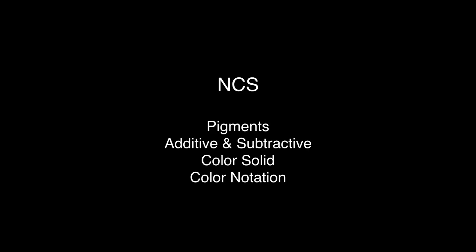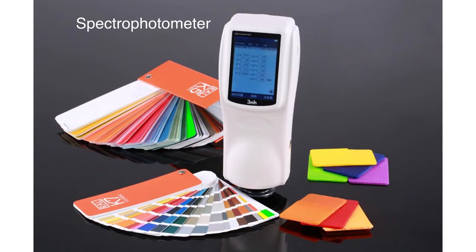Here is a color chart that is part of the NCS system. When you work with the NCS, you're dealing with pigments, but there's also an additive and subtractive blend. It has a color solid, and it's designated by color notation, just like the Munsell.